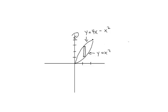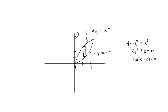That means we're going to be using dx. To find our points of intersection, we set our two functions equal to each other: 4x minus x squared equals x squared, giving us 2x squared minus 4x equals 0, which factors as 2x times (x minus 2). So x equals 0 and x equals 2 are our points of intersection, giving us limits of integration from 0 to 2. The radius from the axis of rotation to our slice is x.